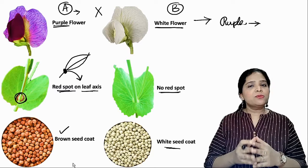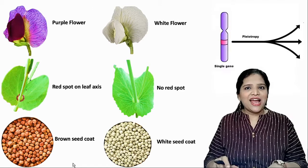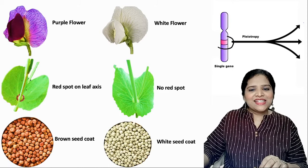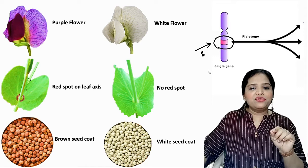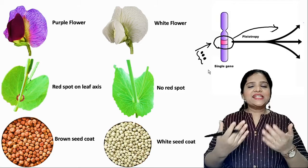If offspring had purple flowers, that plant also had brown seeds and red spots on the leaf axil. If offspring had white flowers, the plant also had a white seed coat and no red spot. Mendel recorded that these three characters were simultaneously inherited, but he did not know this was due to pleiotrophism. So pleiotrophism was originally recorded by Mendel, and later scientists discovered and explained the phenomenon.